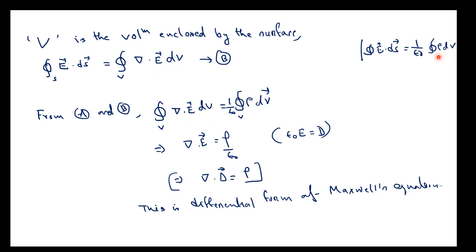We write ∇·E dV = (1/ε₀)ρ dV on both sides. Since dV and dV are the same, we get ∇·E = ρ/ε₀. Using the relation ε₀E = D, we substitute to obtain ∇·D = ρ.